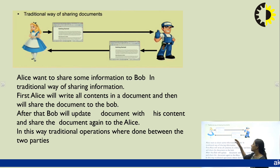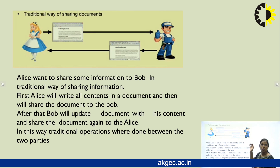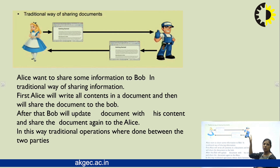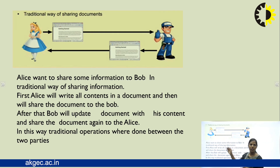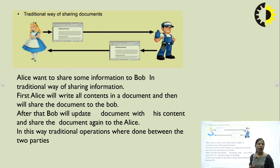Then if Bob wants to change or update the document, he makes changes and sends it back to Alice. This is how the traditional operation was done — a lengthy back-and-forth communication process.